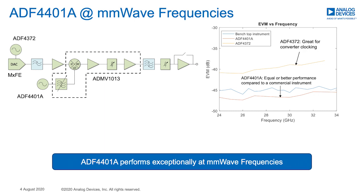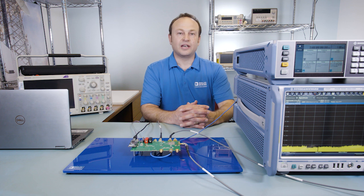Here is an example signal chain constructed using ADF4401A and other devices. The EVM performance of the signal chain using ADF4401A is much better than using a traditional PLL-based LO. Using ADF4401A, we can achieve equal or better EVM performance compared to a commercial benchtop signal generator.